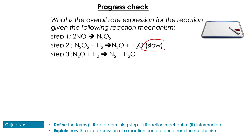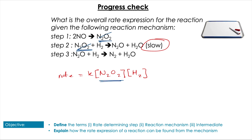With the same mechanism, what's the overall rate expression? With these questions we always have to find the rate determining step, which is the second one. If we write an initial rate expression, we get rate equals K[N2O2][H2]. However, N2O2 is produced by step one and used in step two, so it's an intermediate. We go back to the first reaction and find it takes 2NO to produce N2O2. So the rate expression is rate equals K[NO]²[H2].